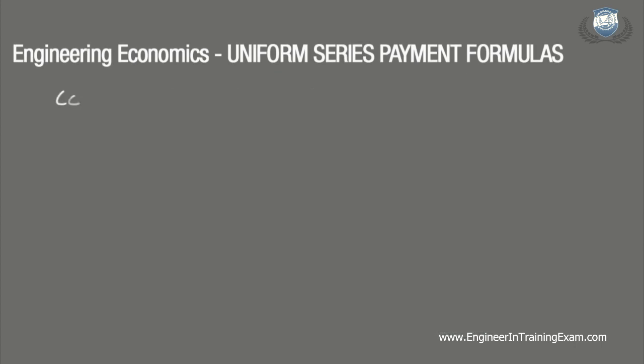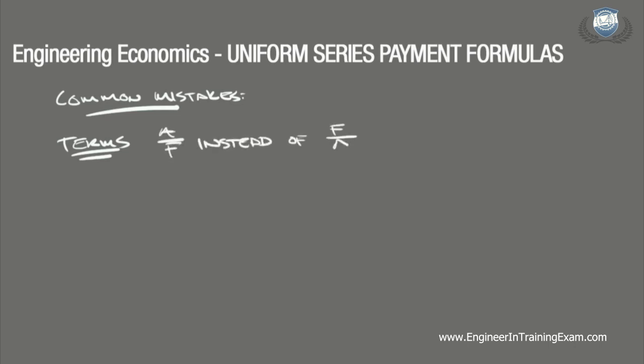There are a few ways we can mess up on a problem like this. When using the compound interest tables, it is important to make sure you are referencing the correct term. It is very easy to jump columns and use the value defined in the A/F column instead of the F/A column. In the same way, it is easy to reference the wrong row for the number of periods. We may catch this mistake when our answer is significantly off, but sometimes using the wrong ratio or period isn't always evident, making it crucial that you pay attention to all the terms.